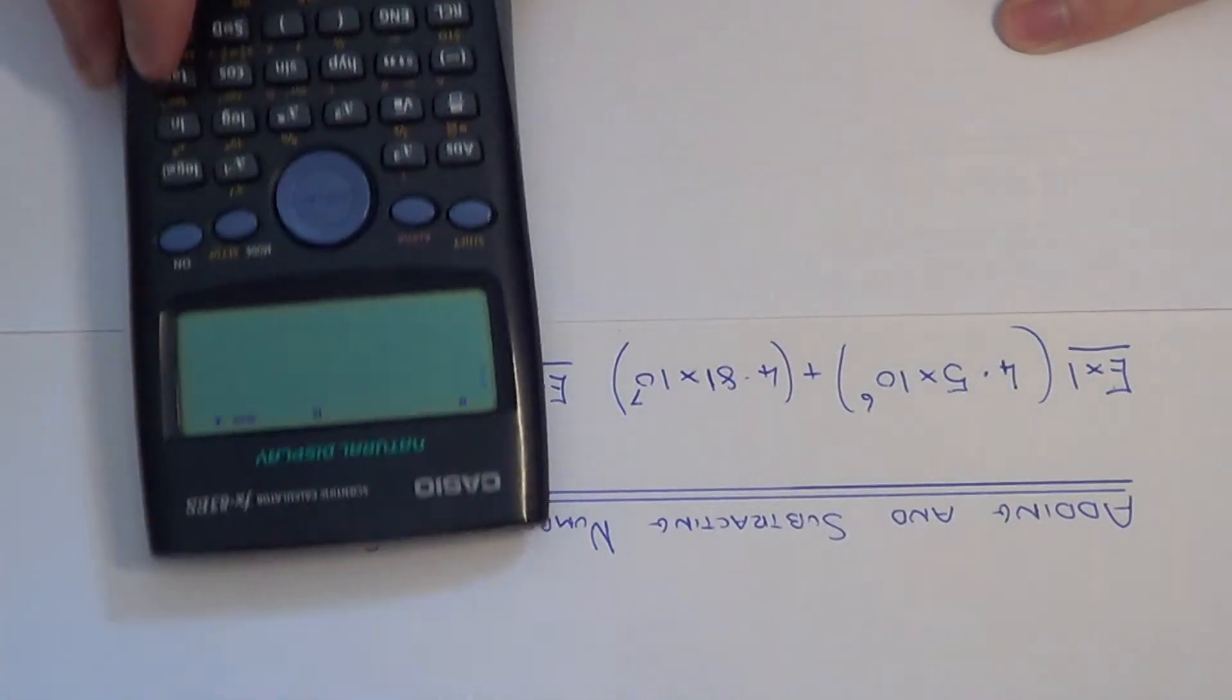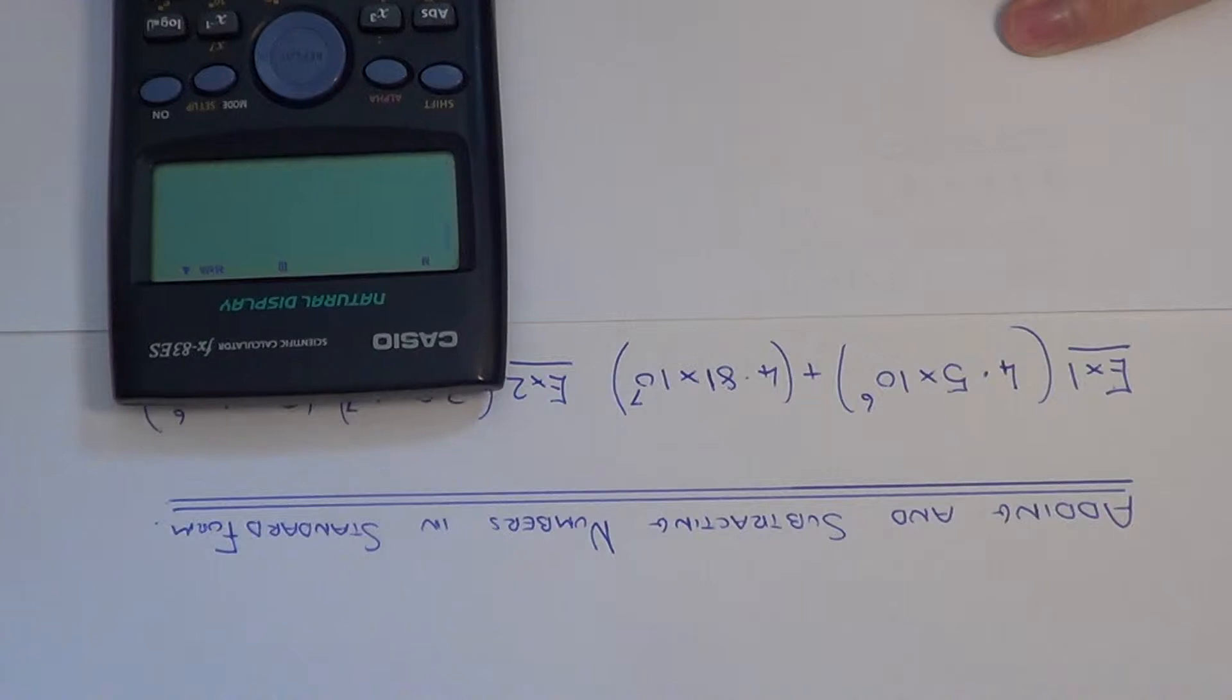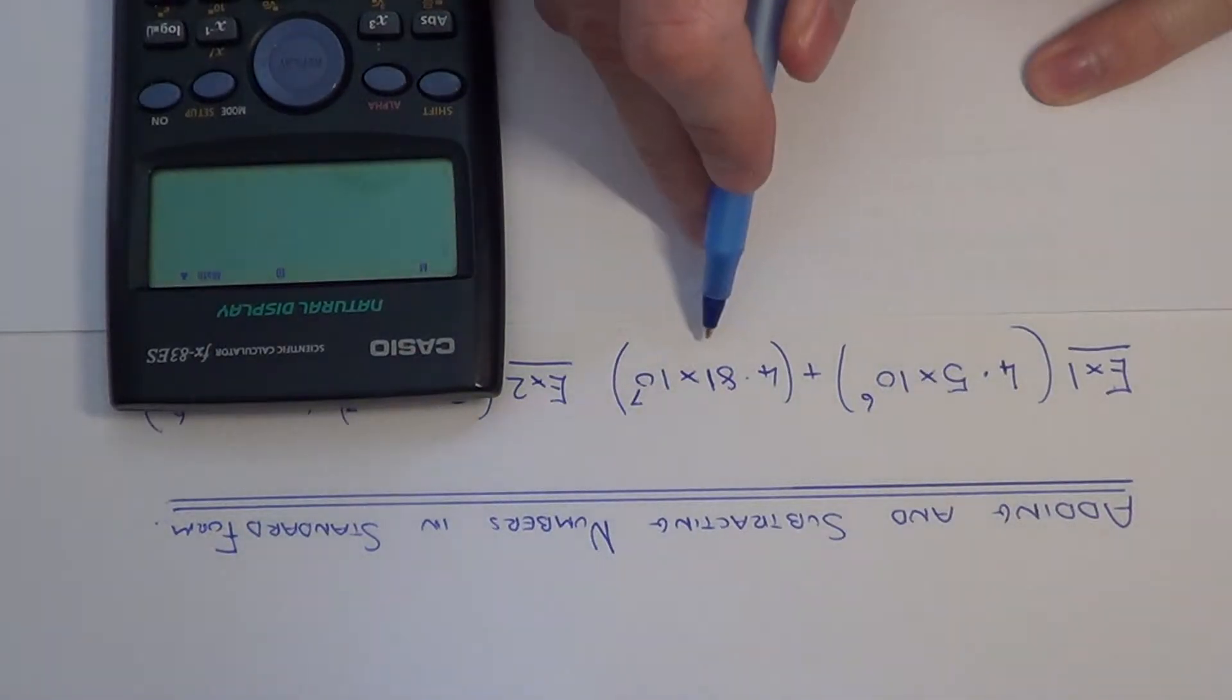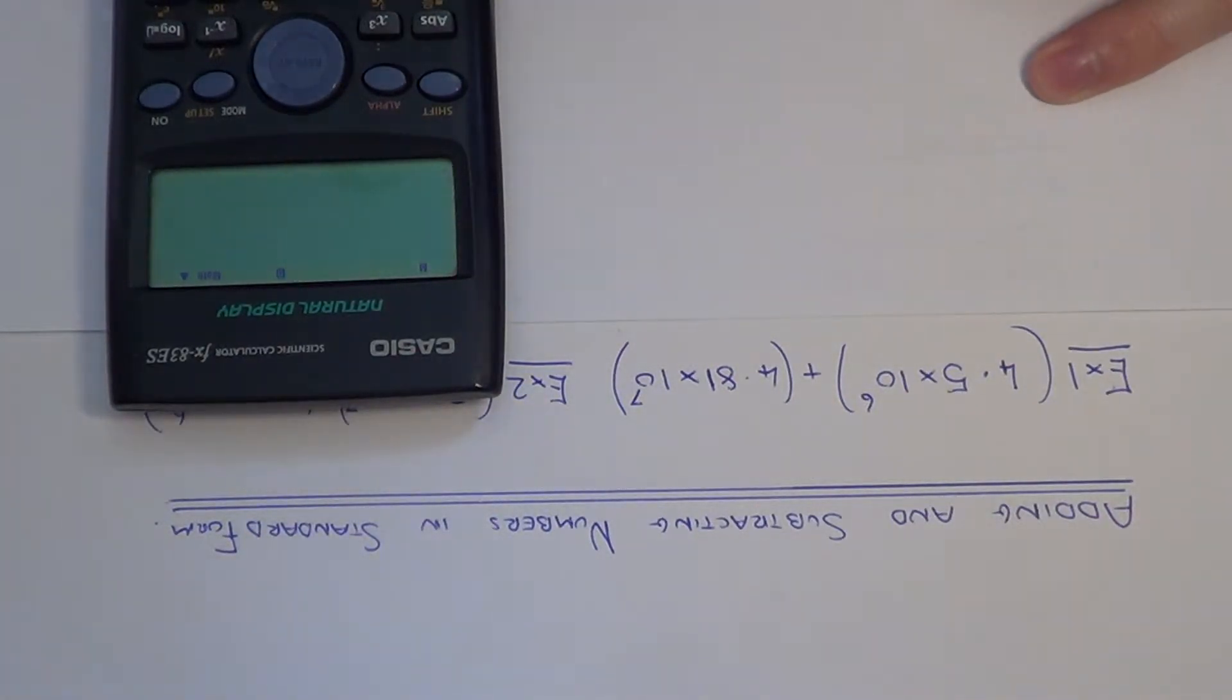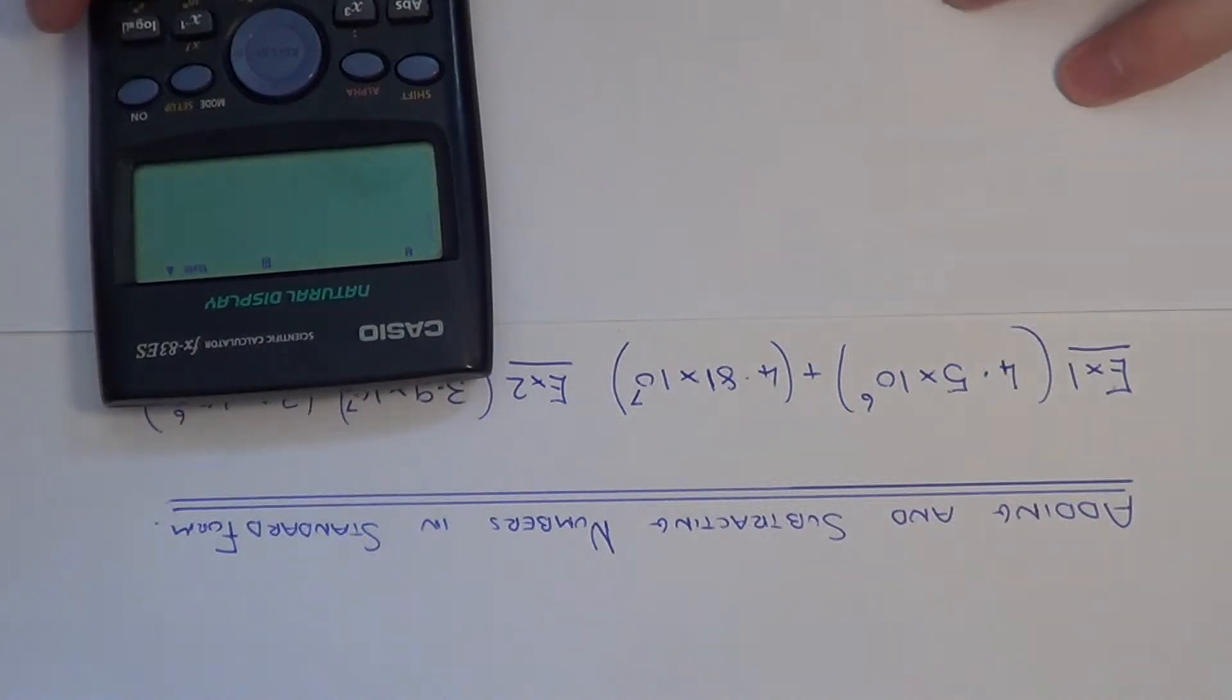Hi, today I'm going to show you a couple of examples on how to add and subtract numbers written down in Standard Index Form using a Scientific Calculator. So let's have a look at Example 1.